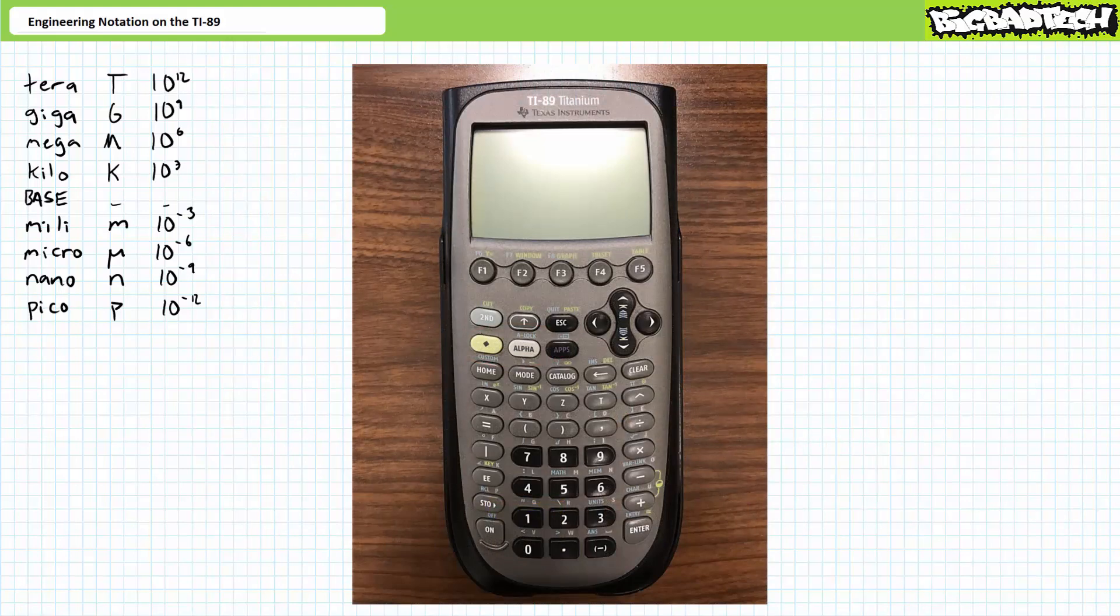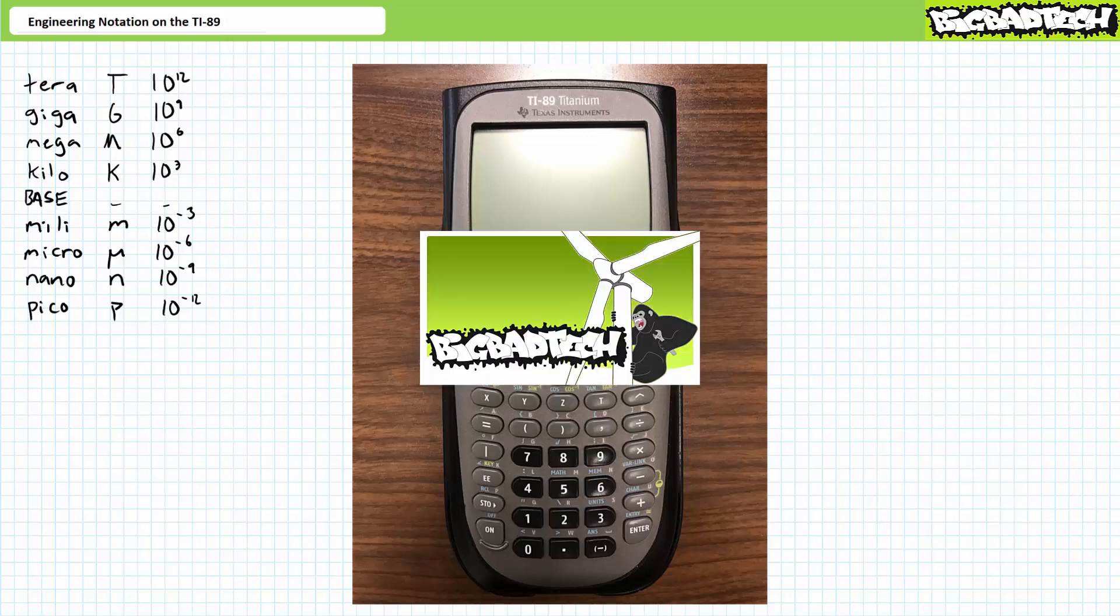Our objective during this short lecture is to learn to enter and interpret engineering notation on the TI-89. This lecture presumes the user is marginally skilled at writing and reading numbers in proper engineering format as illustrated in the engineering notation lecture available at the Big Bad Tech channel. If you haven't watched this lecture yet, please take the time to do so now.